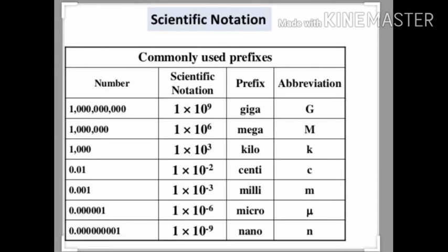We have prefixes for scientific notation: 10^9 is giga, 10^6 is mega, 10^3 is kilo, 10^-2 is centi, 10^-3 is milli, 10^-6 is micro, and 10^-9 is nano. These are the common prefixes used in scientific notation.